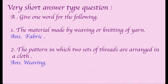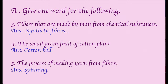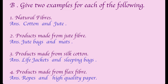Very short answer type questions. Give one word for the following: First - material made by weaving or knitting of yarn: Fabric. Second - pattern in which two sets of threads are arranged in cloth: Weaving. Third - fibers made by men from chemical substances: Synthetic fibers. Fourth - small green fruit of cotton plant: Cotton boll.